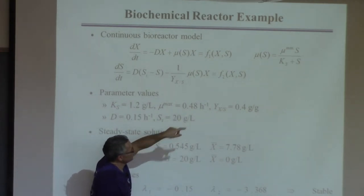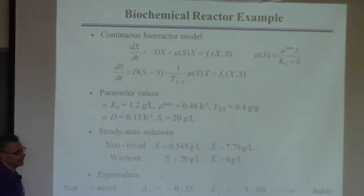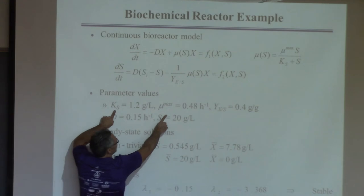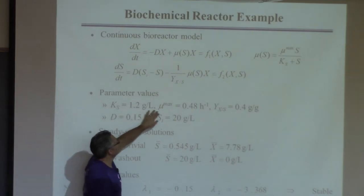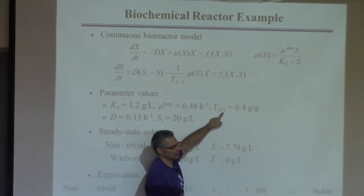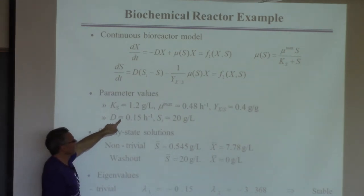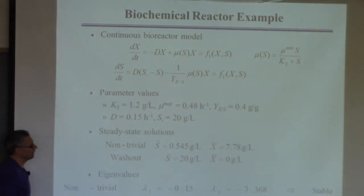The model has parameters including the growth function — which increases quickly at low values of S and saturates at high values because the cell can't consume nutrients faster than its capacity. Parameters include the two growth function parameters, the yield coefficient (how much biomass per unit substrate), the dilution rate (flow divided by volume), and the inlet substrate concentration like glucose.